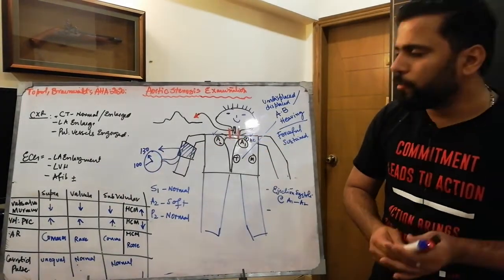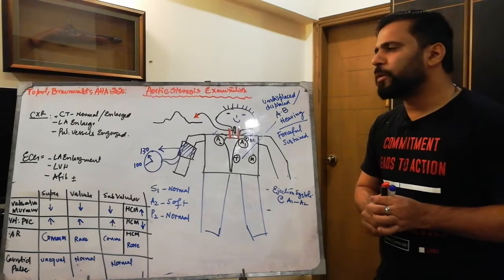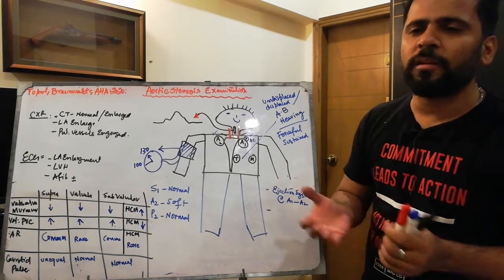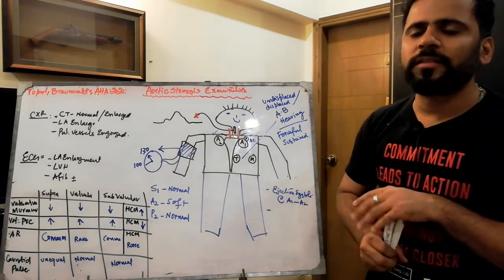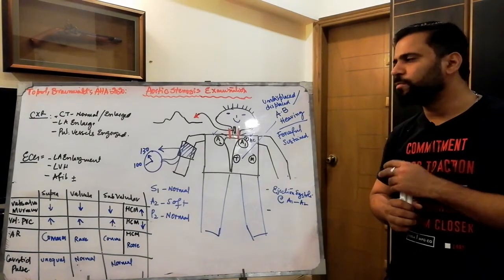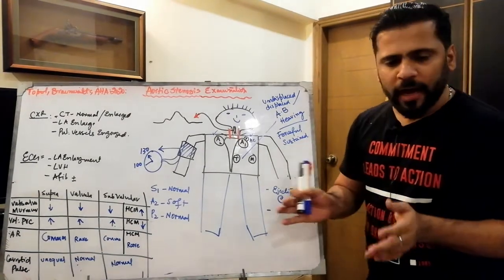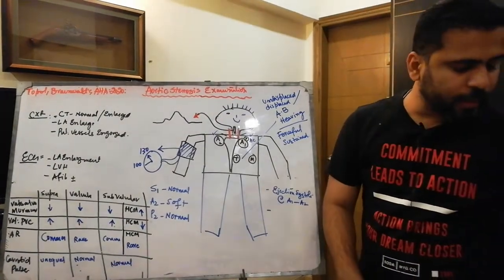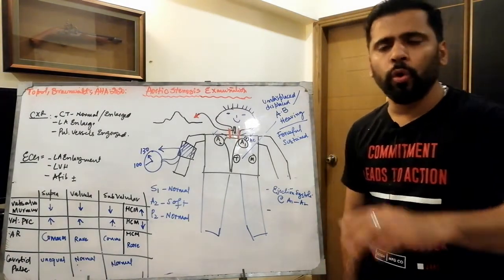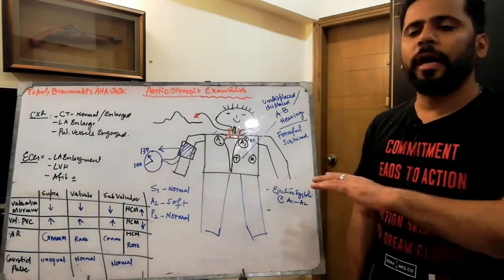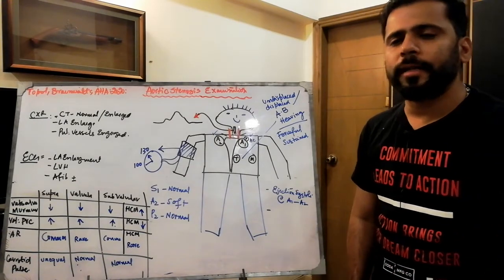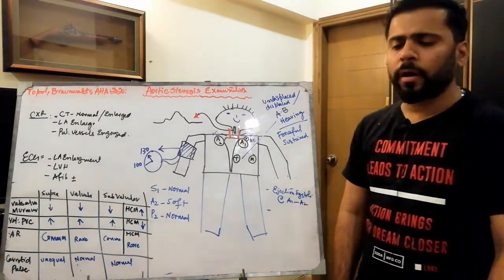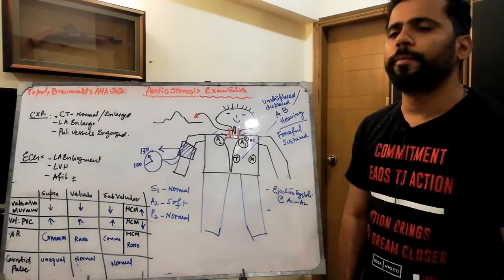These are the clinical exam findings of aortic stenosis, which are very important for short cases — especially in Pakistan for the College of Physicians and Surgeons exam. In the next lecture, we will discuss the complete echocardiographic findings including transthoracic and transesophageal echo, indications for transesophageal echo, dobutamine stress echo, and the severity parameters of echocardiography in aortic stenosis.